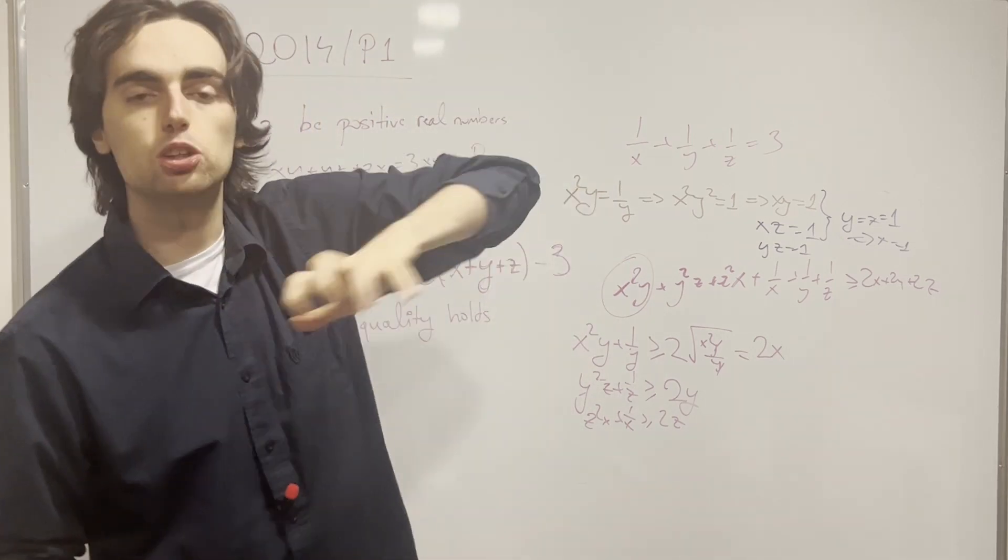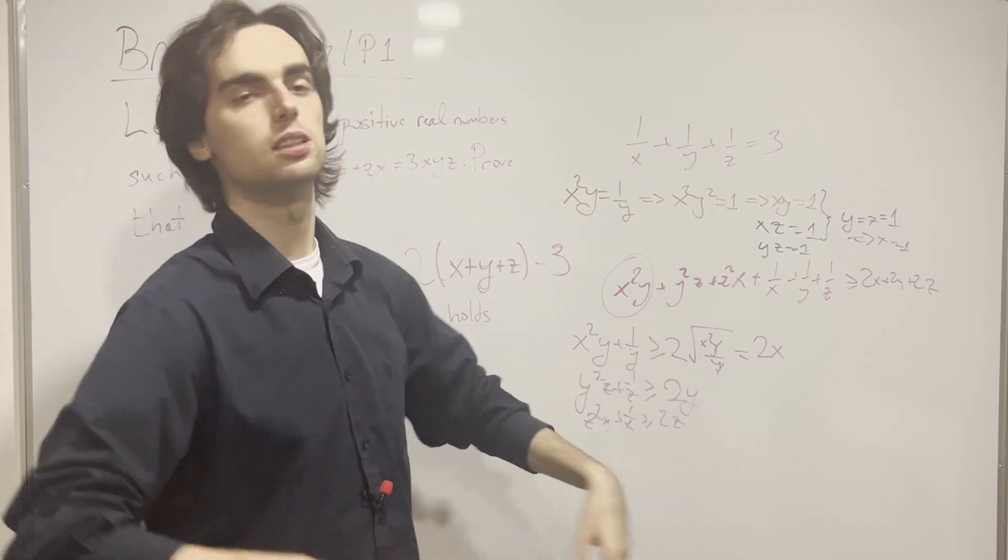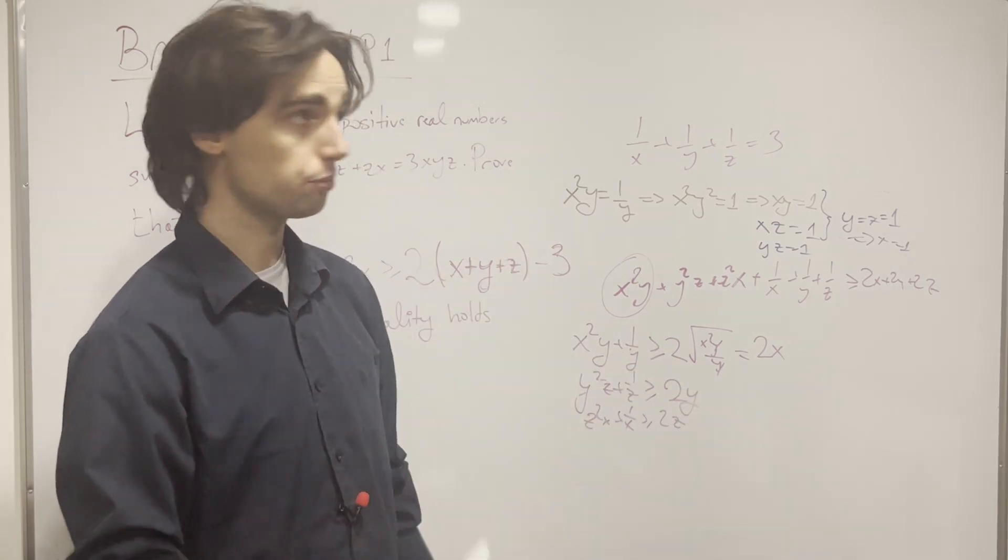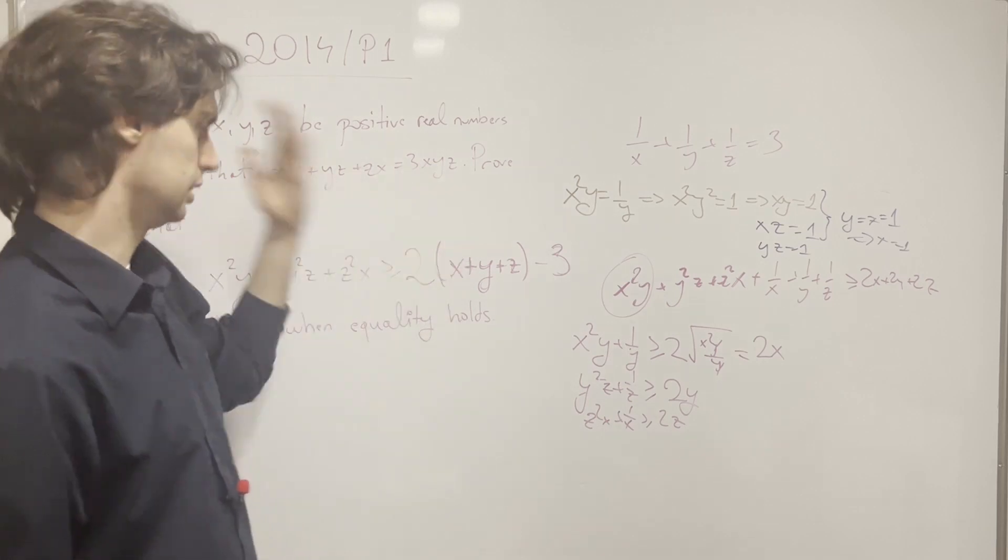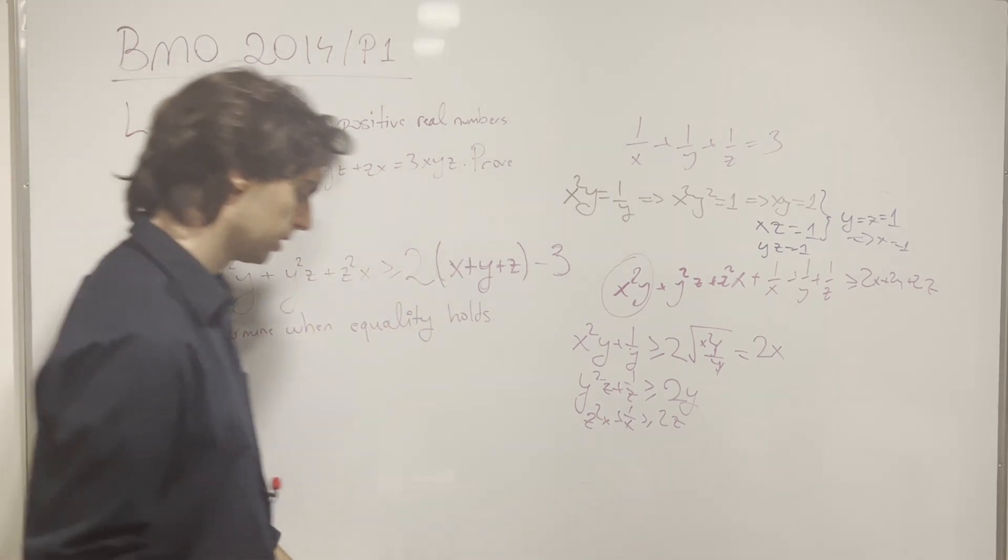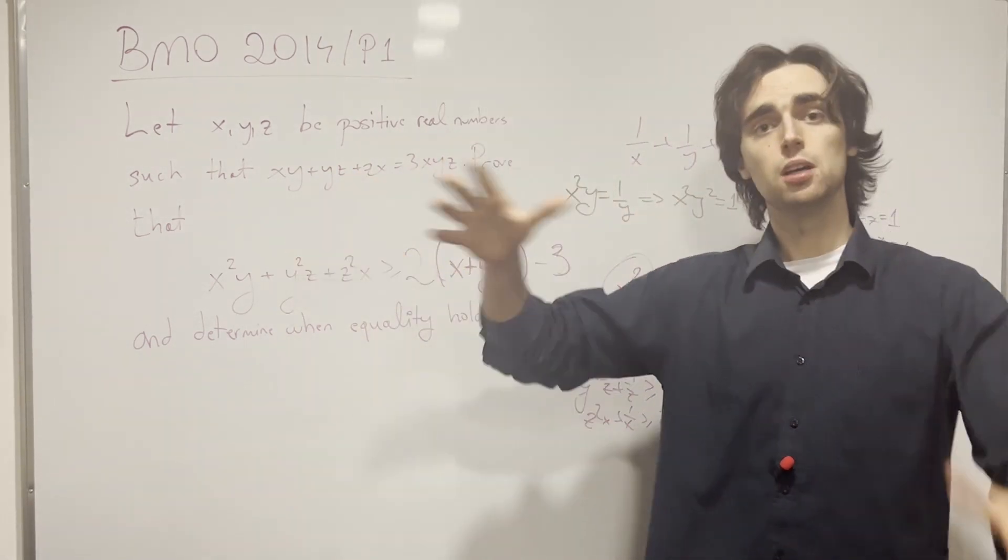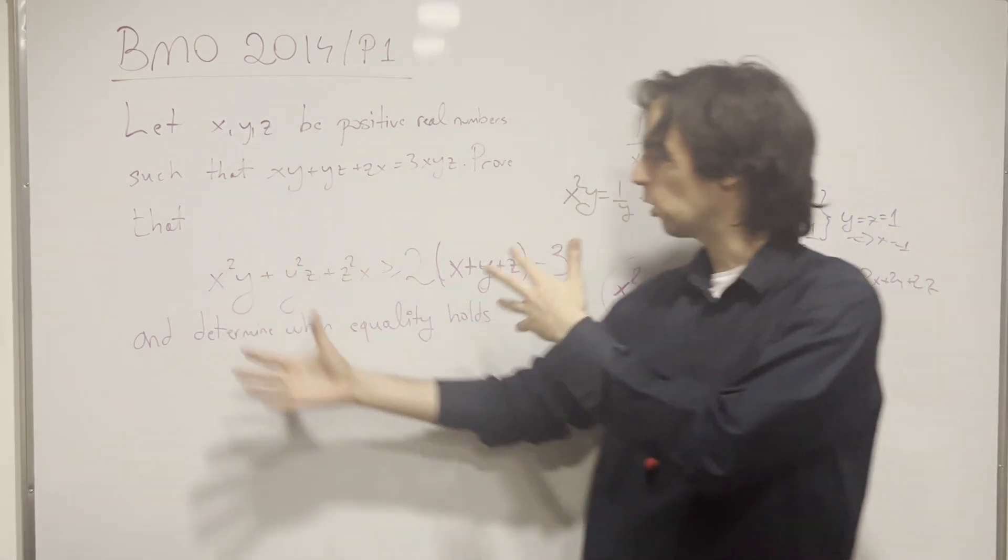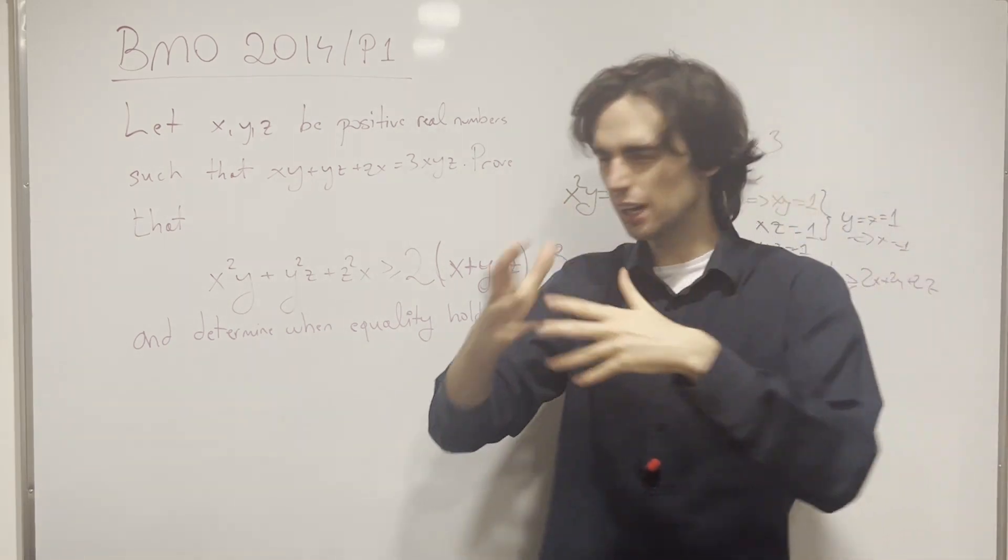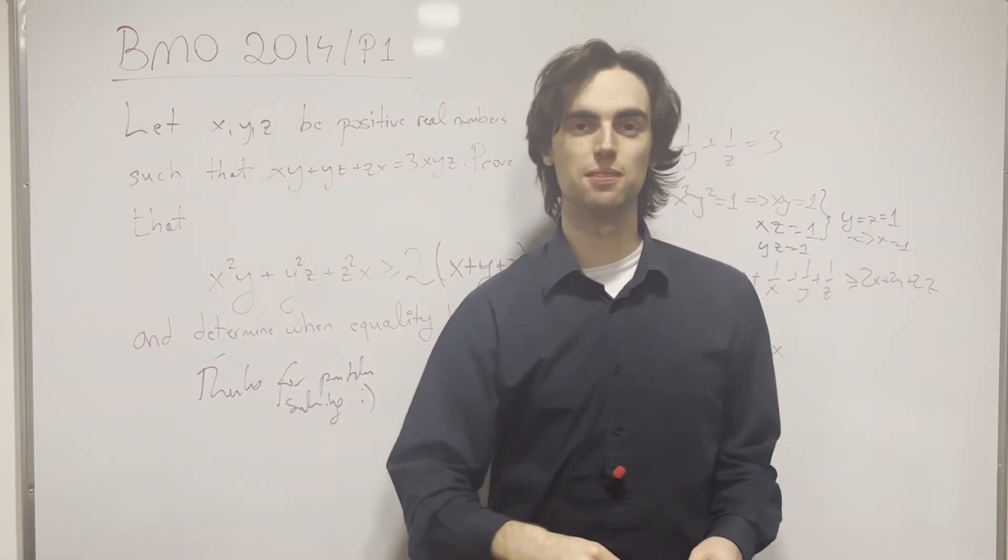And that implies that x, y, and z are equal, given the problem condition, and given this, it means they must be equal to 1. And the problem condition holds true. This is, you have equality here. And that finishes up the problem, really. And this is just a technique problem. You try out inequalities, and you'll sort of notice this as you try more inequalities, you'll get better at this. And as always, thanks for problem solving.